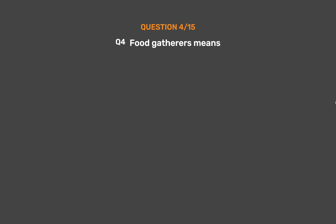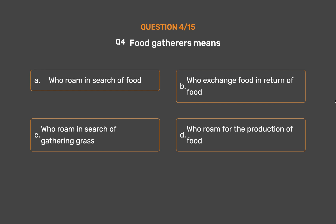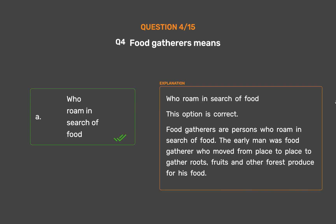Question number four. Food gatherers means: Option A - Who roam in search of food; Option B - Who exchange food in return of food; Option C - Who roam in search of gathering grass; Option D - Who roam for the production of food. The correct answer is Option A: Who roam in search of food. Food gatherers are persons who roam in search of food. The early man was a food gatherer who moved from place to place to gather roots, fruits and other forest produce for his food.